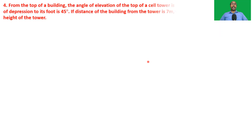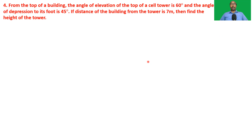The fourth problem: from the top of a building, the angle of elevation of the top of a cell tower is 60 degrees, and the angle of depression to its foot is 45 degrees. If the distance of the building from the tower is 7 meters, then find the height of the tower.